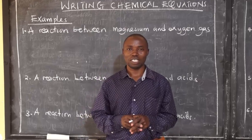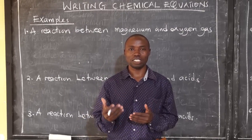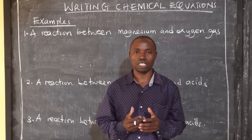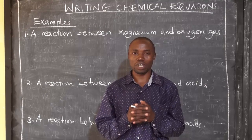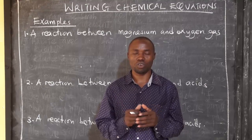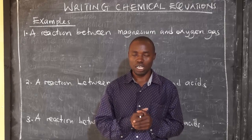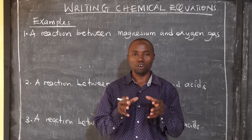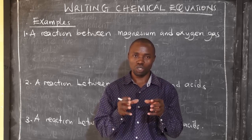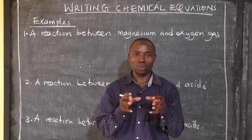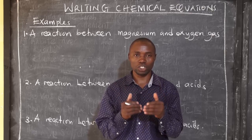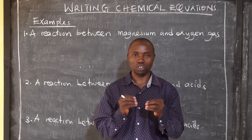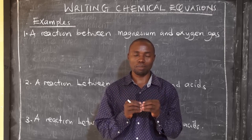We are aware that chemistry is actually studying matter and how matter comes into interactions involving chemical reactions, and every chemical reaction involves use of a chemical equation. Today we are going to learn how to write a chemical equation. Watch this video to the end because you will learn a lot from it — I'm going to clearly explain things that students have been facing a lot of challenges in: how do you come up with chemical equations?